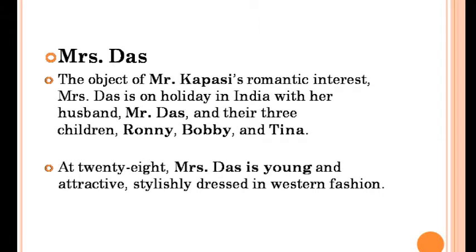The next character is Mrs. Das, the object of Mr. Kapasi's romantic interest. Mrs. Das is on holiday in India with her husband Mr. Das and their three children Ronnie, Bobby and Tina. Like her husband and children, Mrs. Das is of Indian origin but was born and raised in America. At 28, Mrs. Das is young and attractive, stylishly dressed in Western fashion.